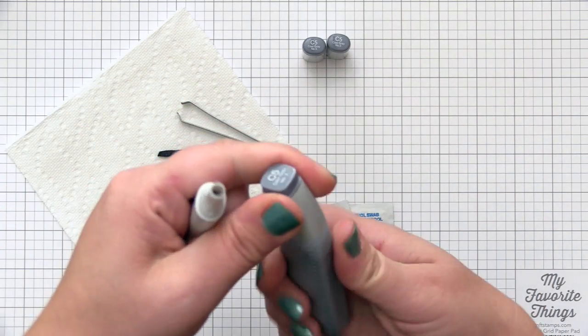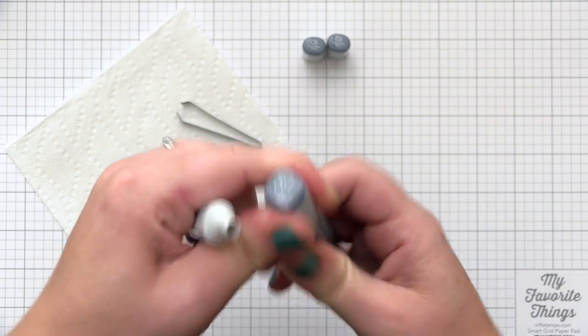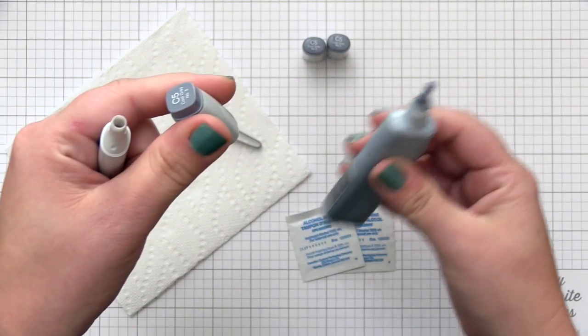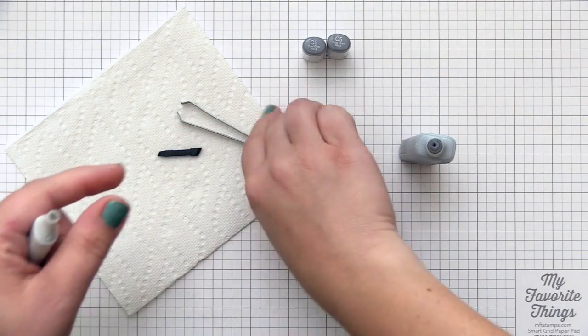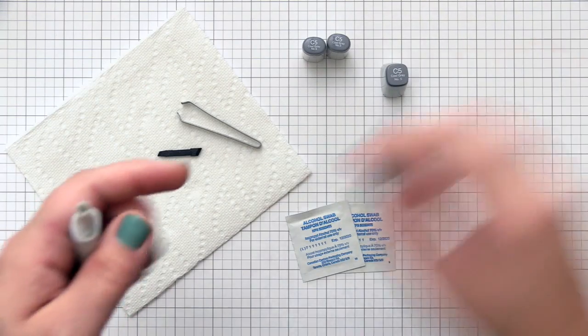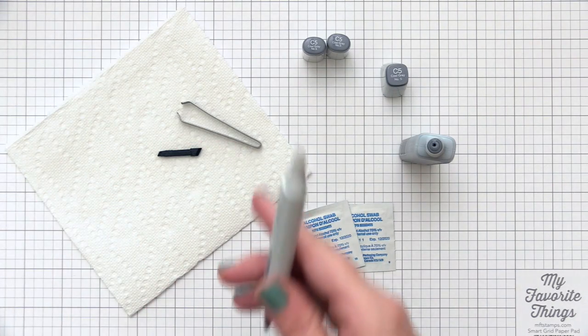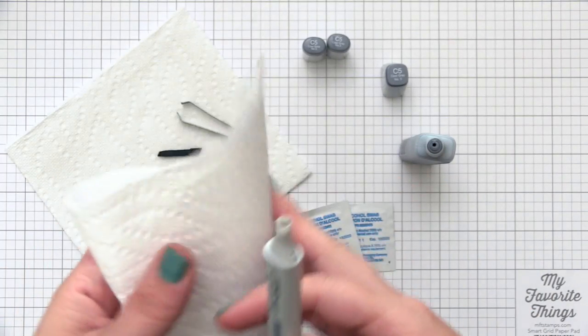If you don't have the Copic tweezers, you can remove the nib with a paper towel, but I definitely recommend tweezers to make sure you don't damage your Copic tips. Once I have that open, I get my refill bottle ready by removing the cap, and now I'm ready to add ink to the marker.